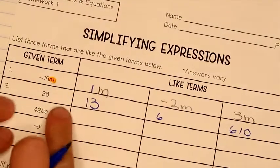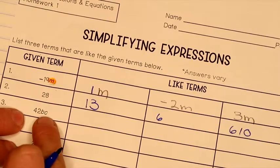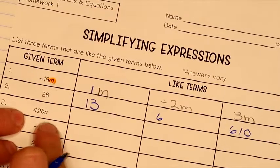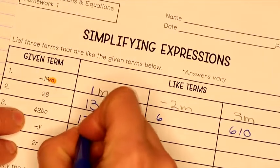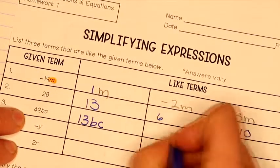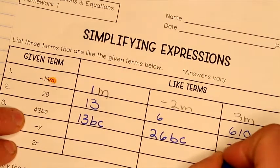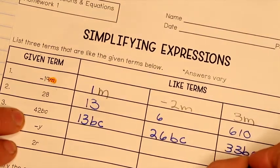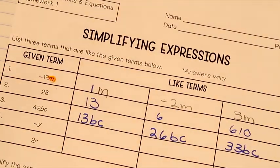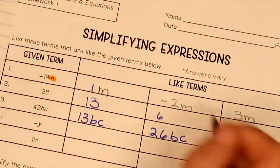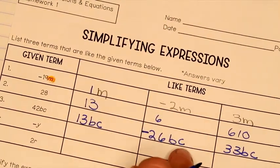These are like terms. So now we have 42 BC. You guys see that? 42 BC. We can do 13 BC, 26 BC, and 33 BC. Again, as long as it has the BC, we're good. I can even make this into a negative, negative 26 BC.